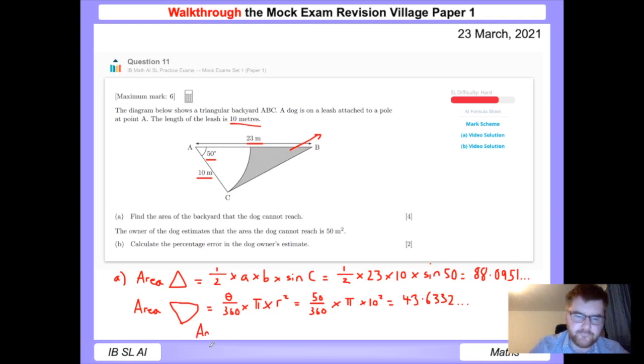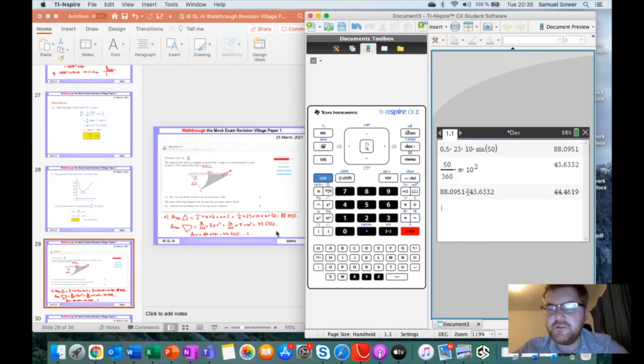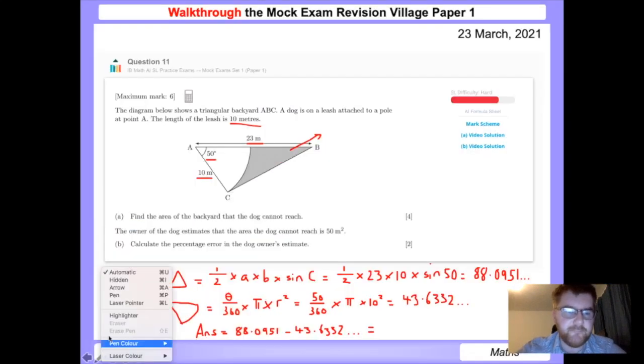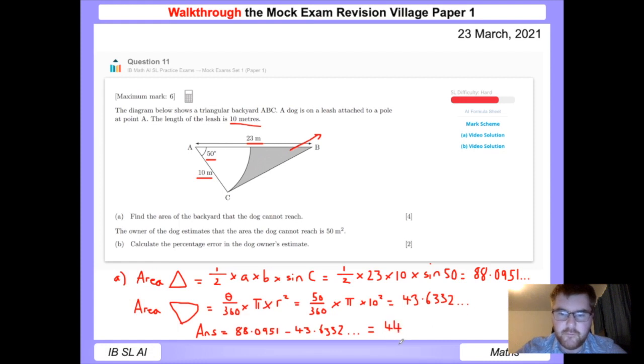So our final answer will be the 88.0951 minus 43.6332, and we're going to use the calculator again to work this out. Okay, as you can see, the answer is 44.4619. You'll be expected to round to three significant figures. In all the calculations here, I've used four decimal places to give myself plenty of room to avoid a rounding error. So now I'm going to write down my answer of 44.5, and we just need to make sure the units are correct here. So 44.5 meters squared, and I always put for the examiner what I'm rounding to.